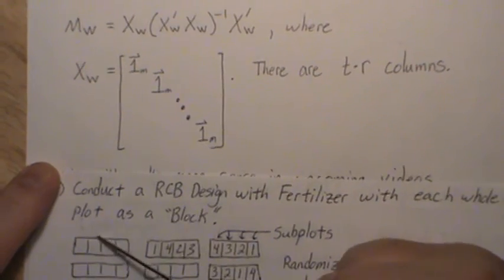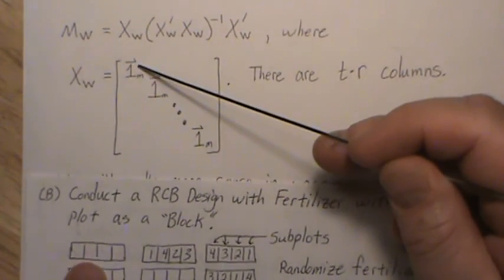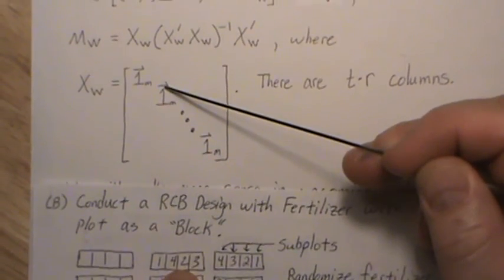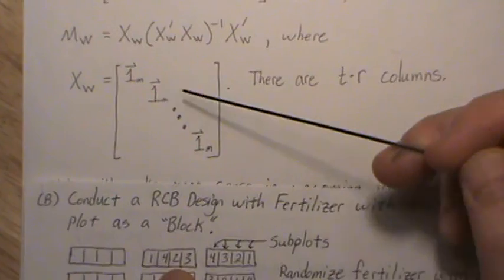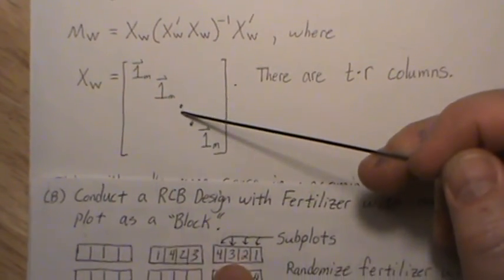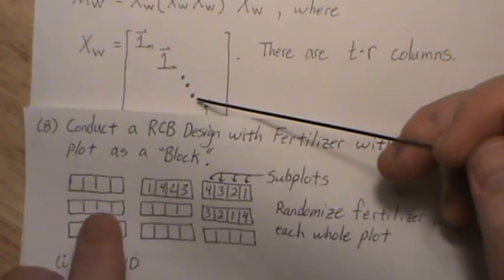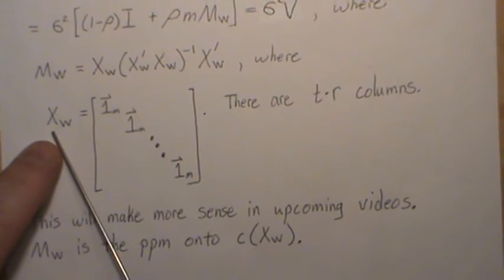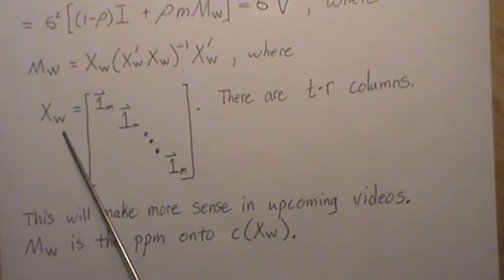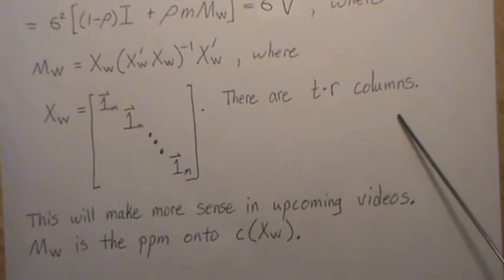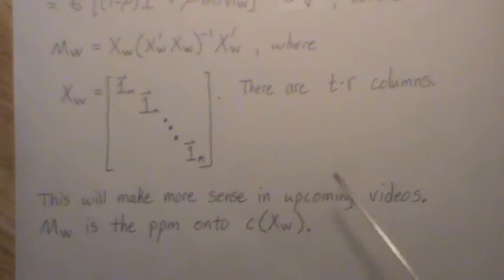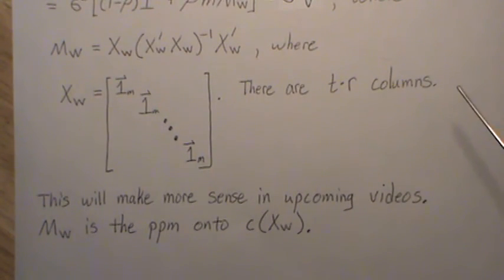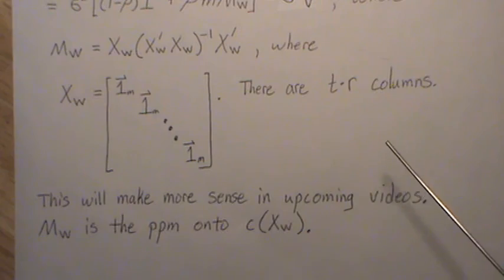W is the perpendicular projection matrix onto the whole plot column space, which is the form of a perpendicular projection matrix where W is part of the design matrix that models the whole plot effect. As we move through each whole plot, we have an indicator variable — a one in the column for that whole plot — and then we move to the next. There are T times R columns in this design matrix, which will make more sense in upcoming videos.